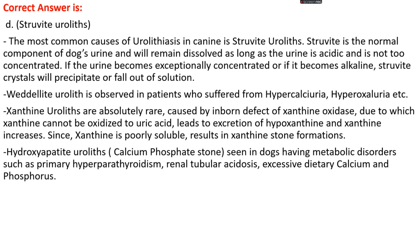Oxalate urolith is observed in patients with hypercalciuria or hyperoxaluria conditions, where calcium levels and oxalic acid levels are high. Xanthine urolith is rare and is caused by an inborn defect of xanthine oxidase, due to which xanthine cannot be oxidized to uric acid, leading to increased excretion of hypoxanthine and xanthine. Since xanthine is poorly soluble, it results in xanthine stone formation. Hydroxyapatite urolith, also known as calcium phosphate stone, is mainly seen in dogs with metabolic disorders such as primary hyperparathyroidism, renal tubular acidosis, or excessive dietary calcium and phosphorus.